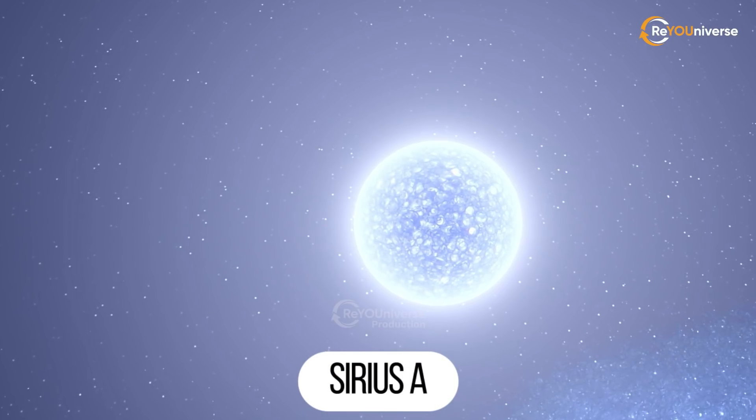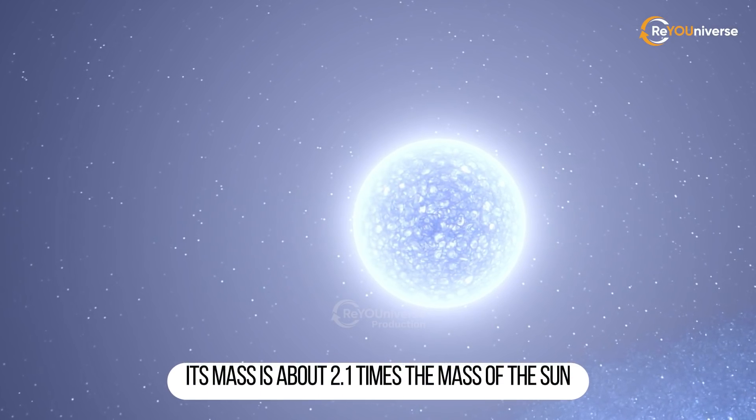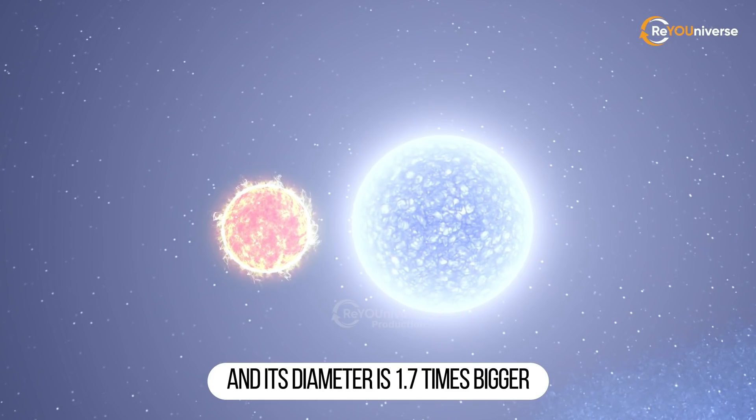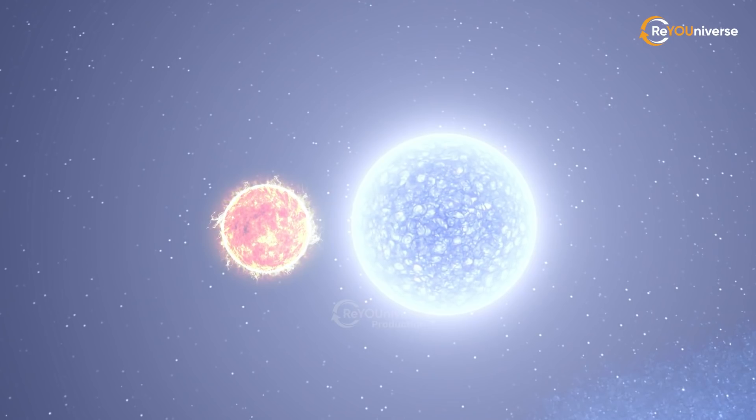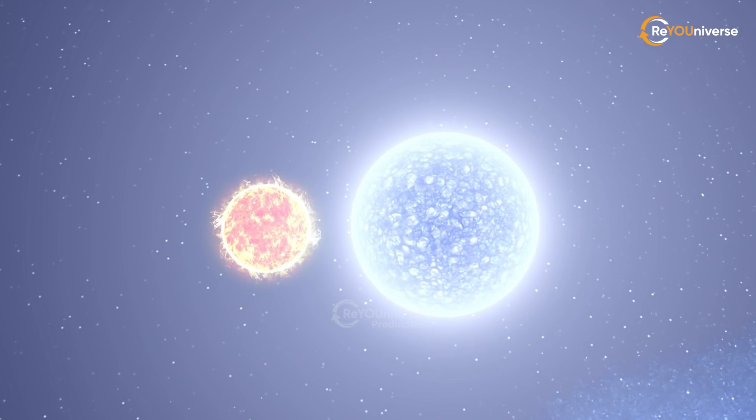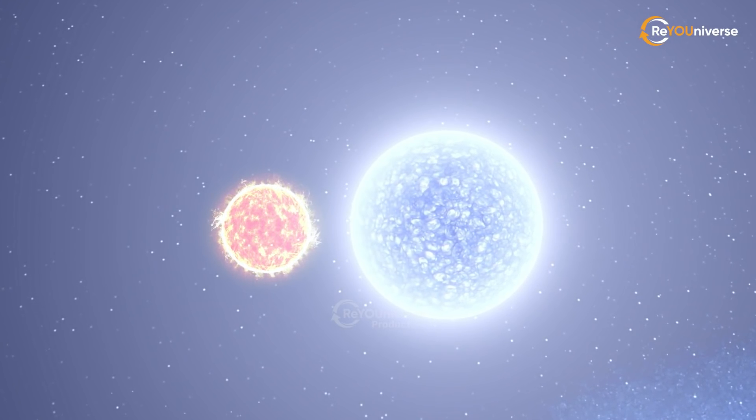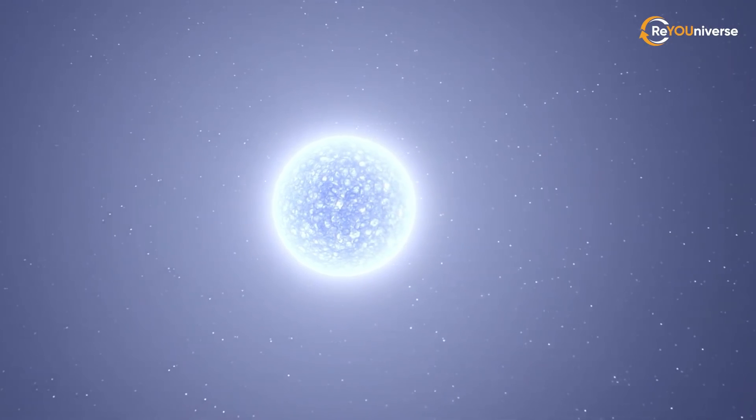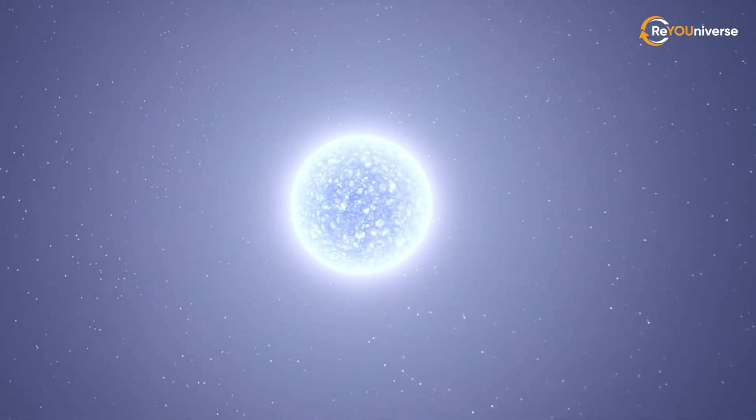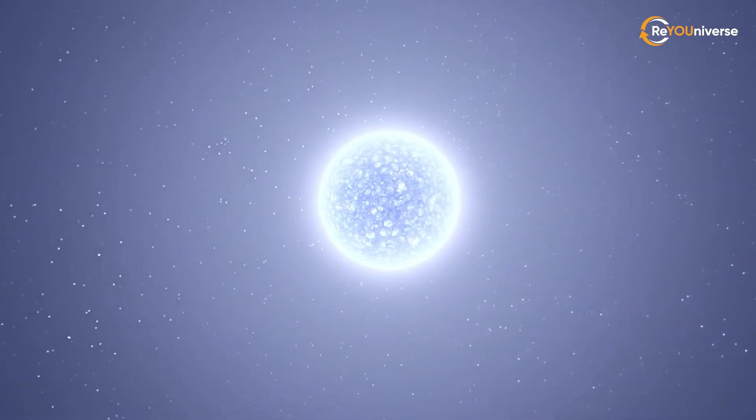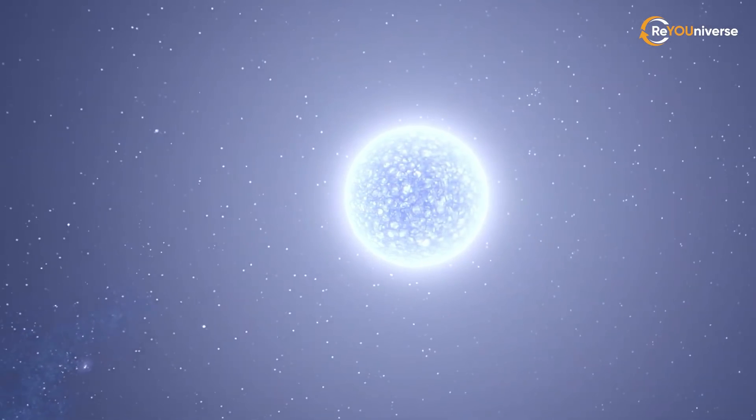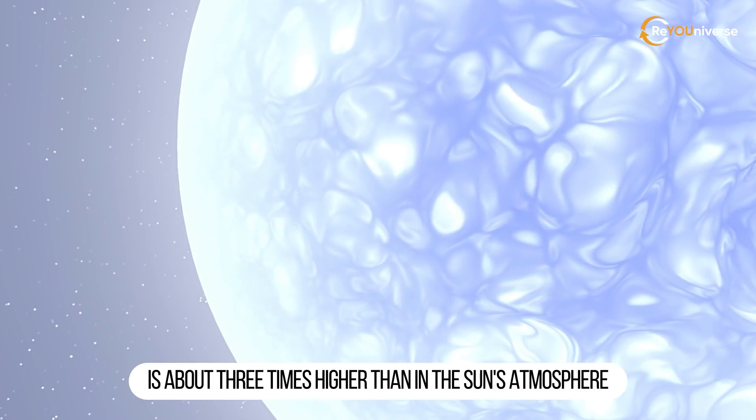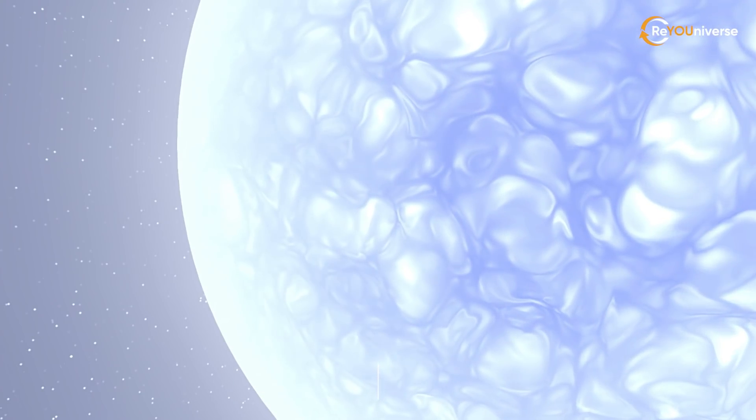Sirius A is a main sequence star of A1 spectral type. Its mass is about 2.1 times the mass of the sun, and its diameter is 1.7 times bigger. Sirius is 25 times more luminous than the sun. The surface temperature is slightly lower than 10,000 Kelvin. Some distinct metallic lines are observed in Sirius A's light spectrum. This indicates it's enriched with elements heavier than helium. For example, iron, which is especially easy to observe spectroscopically.